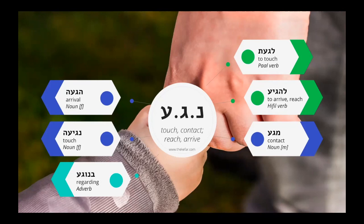Something that touches on a particular topic. You've probably noticed that with all of these words, we have the last two letters of our shoresh — the gimel and the ayin — but not necessarily the nun, our first letter. This is a feature of roots that start with nun. We've seen something similar before with roots that start with yod, but this is the first shoresh we've covered that starts with nun. So you'll always see the gimel and you'll always see the ayin, but you may or may not see the initial nun.